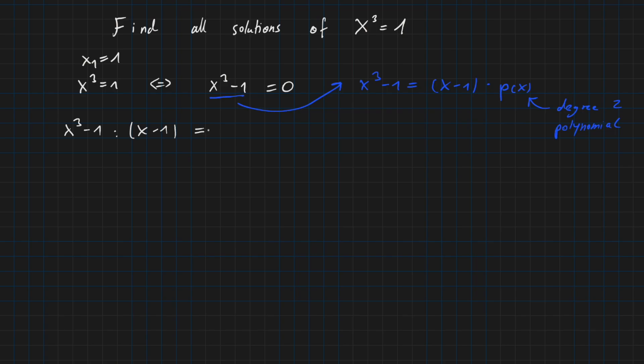So now we are asking ourselves which polynomial times x equals x cubed. It is x squared. So x squared times x equals x cubed. So we can already subtract it from here. And then we also have x squared times minus 1, which is minus x squared.